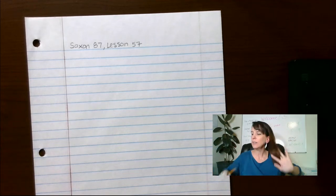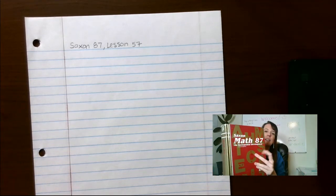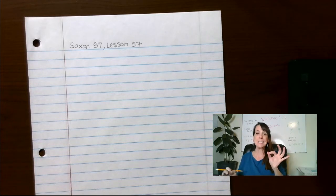Hi guys, welcome back. We are on lesson 57, Saxon 87, second edition. Today we're going to be talking about scientific notation for small numbers. These are things that are going to be real tiny numbers.